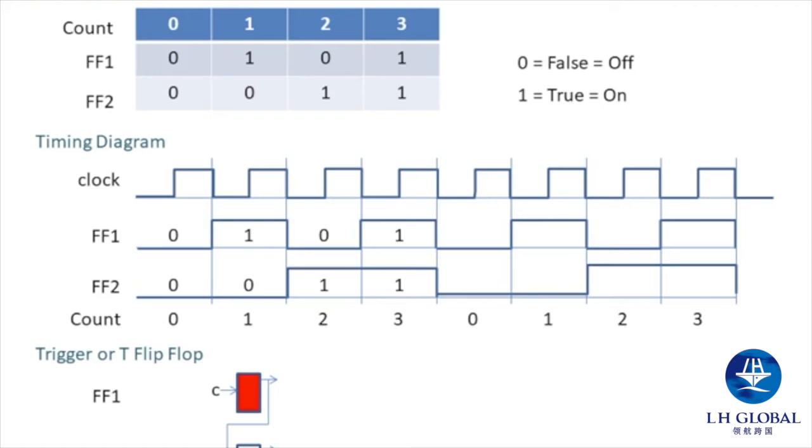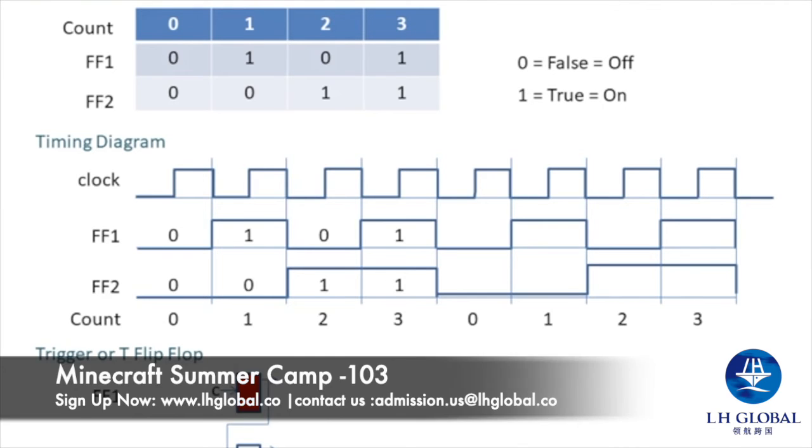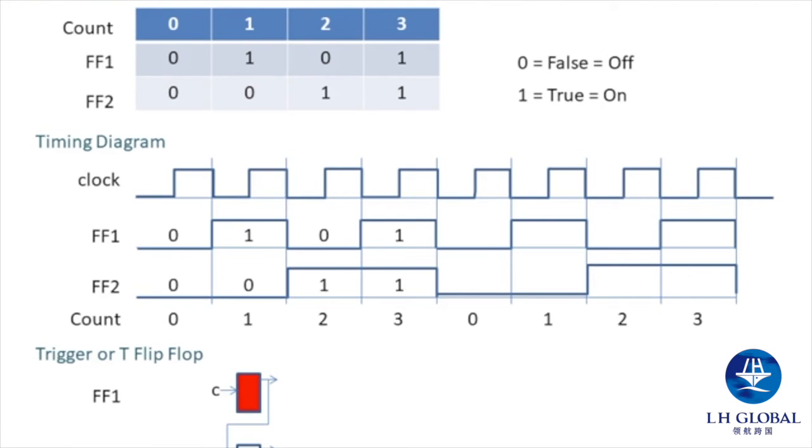So we can take multiple flip-flops, put them together to create multiple states, and we can use Boolean algebra to represent those different states. See if you can figure out from studying this diagram how to count to seven in Boolean algebra.